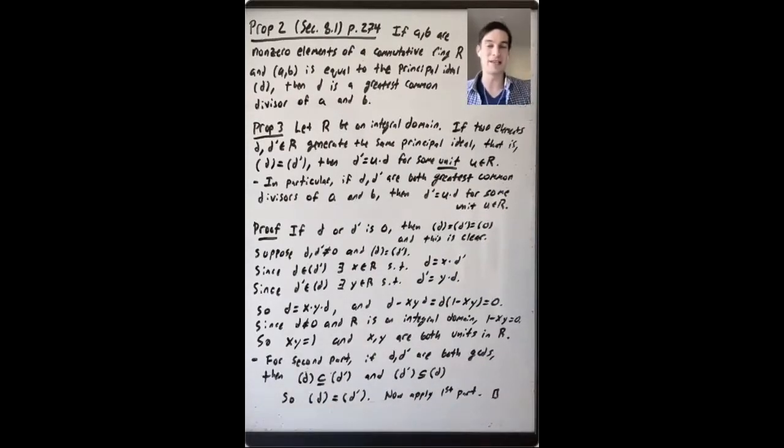So in this discussion of GCDs so far, I've been trying to remember to say a greatest common divisor instead of the greatest common divisor, because there isn't uniqueness in this definition. But the next proposition says how all these different greatest common divisors are related to each other.